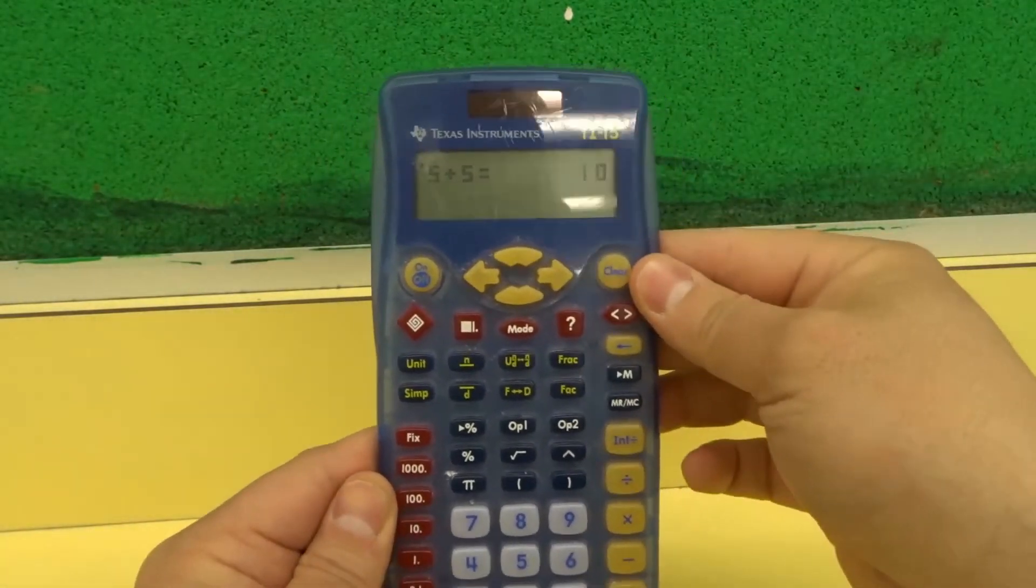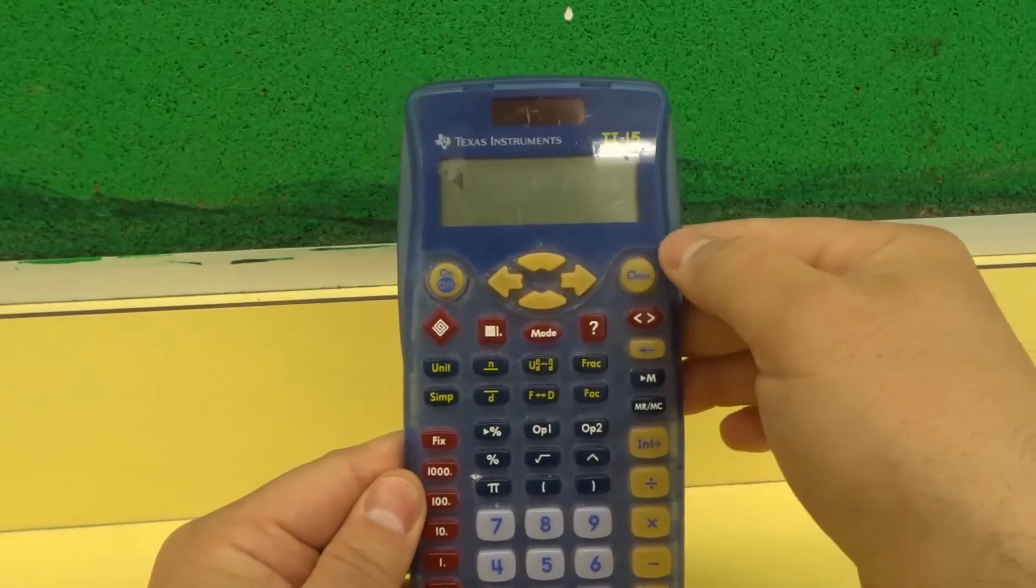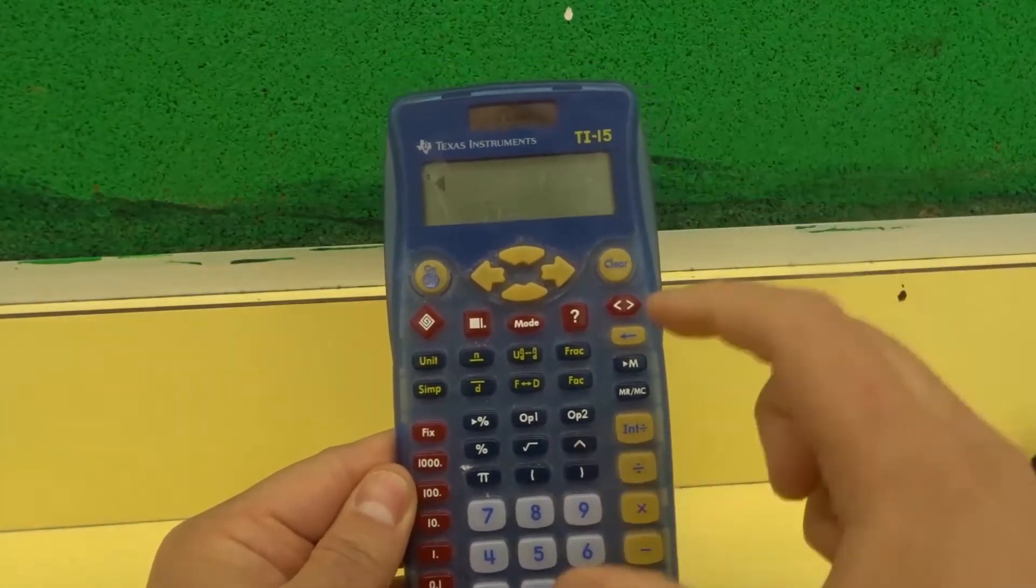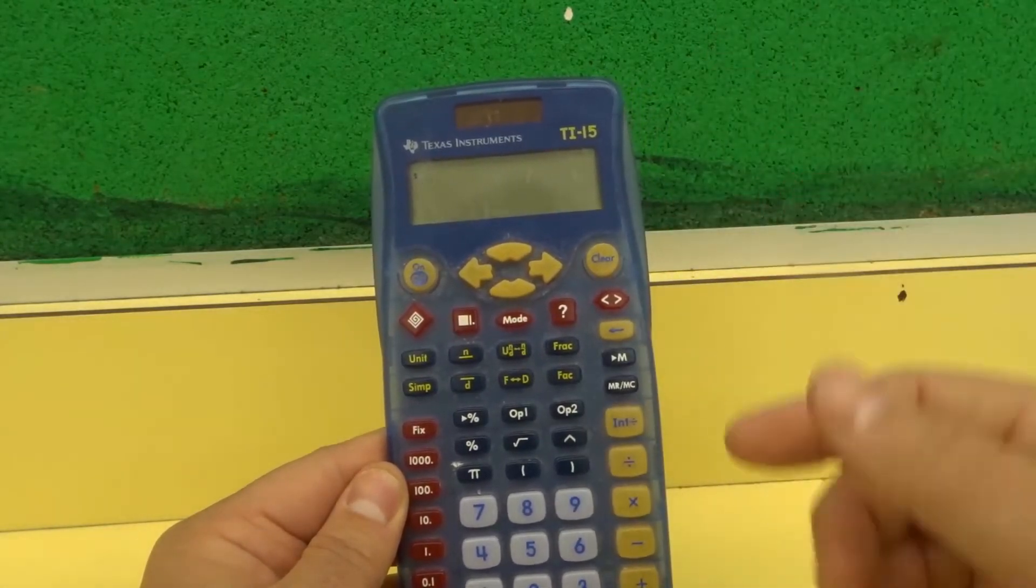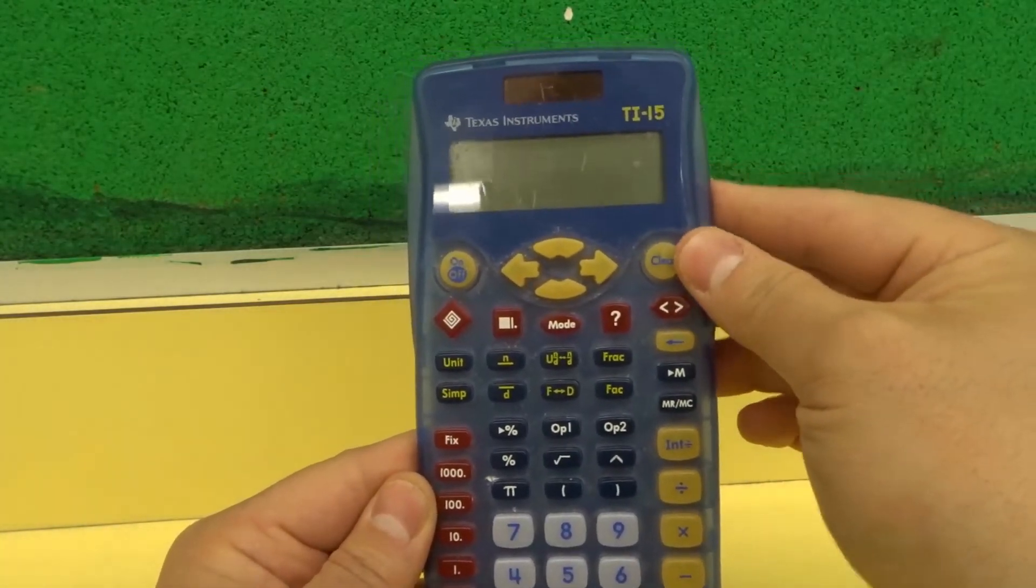Now if you want to clear what you just did, you hit the clear button. In some calculators, it might say AC or an AC, which stands for like clear and all clear. But in this one, it actually says clear right there.